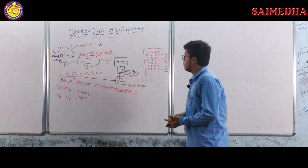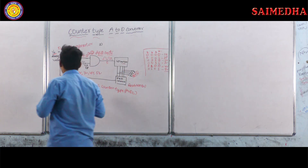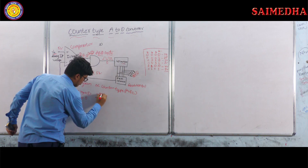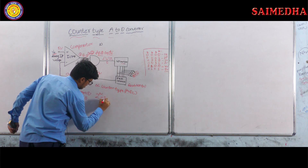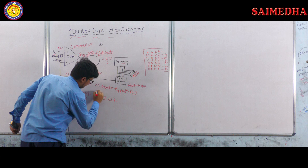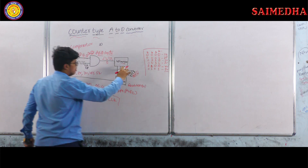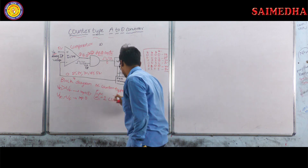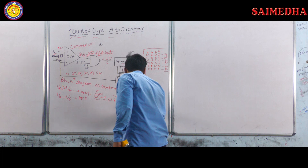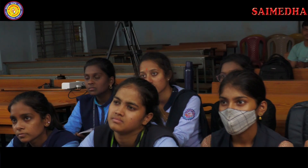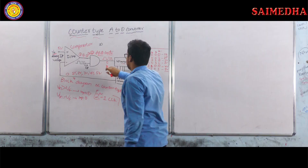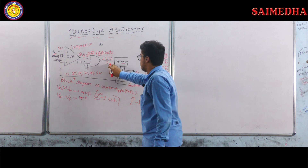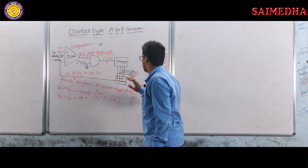The main disadvantage is that this method requires 2 to the power n minus 1 clock pulses. For a 4-bit converter, n equals 4, so 2 to the power 4 minus 1 equals 15. This means the circuit requires 15 clock pulses, which is the main disadvantage. This also results in a larger time delay constant for the operation. Thank you.